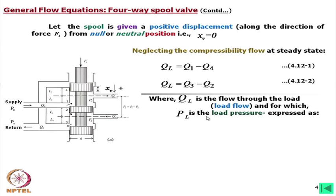The load pressure PL equals P1 minus P2. For a linear actuator, P1 acts on one side of the piston and P2 on the other. For servo valve actuators, the symmetric actuator configuration is normally used, with rod ends at both ends of the piston so that the piston area is the same in both directions. This symmetric arrangement is standard, though exceptions exist.